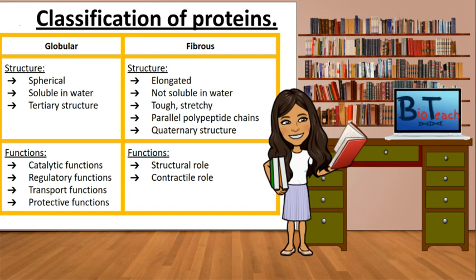This table shows you a direct comparison of globular and fibrous proteins. You can see that the globular proteins have a tertiary structure that is crucial to its function, and that the polypeptide chains are folded into a spherical shape.